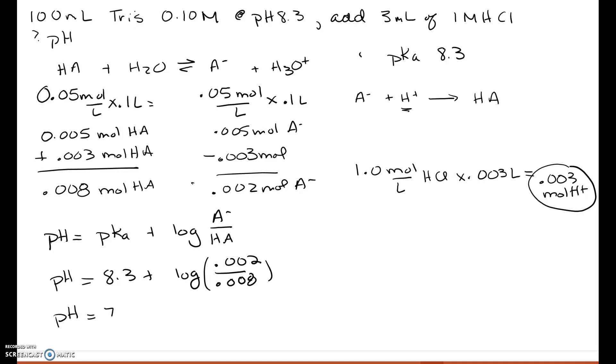you get a pH of 7.7, which makes sense because we started at a pH of 8.3 and we added acid. So we expect the pH to drop and it dropped to 7.7.